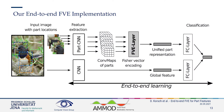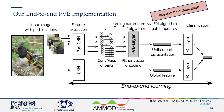Given the following classification pipeline where we have our input image with part locations, we use a part CNN to extract convolutional maps from these parts and use a Fischer vector encoding layer to encode this to a unified representation feature, which is then together with the global feature used by the classification layers to classify the entire image. But instead of learning the GMM parameters with stochastic gradient descent, we use an EM algorithm with mini-batch updates.